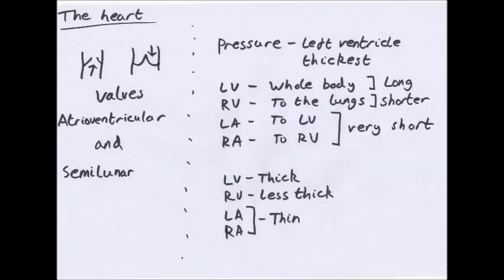There are four main sections of the heart: two atria on top and two ventricles on the bottom. The atria have the thinnest walls, the right ventricle has the next thickest, and the left ventricle has the thickest wall. The reason is that the left ventricle must push blood throughout the whole body, the right ventricle pushes blood to the lungs, and the atria only push blood into their respective ventricles.